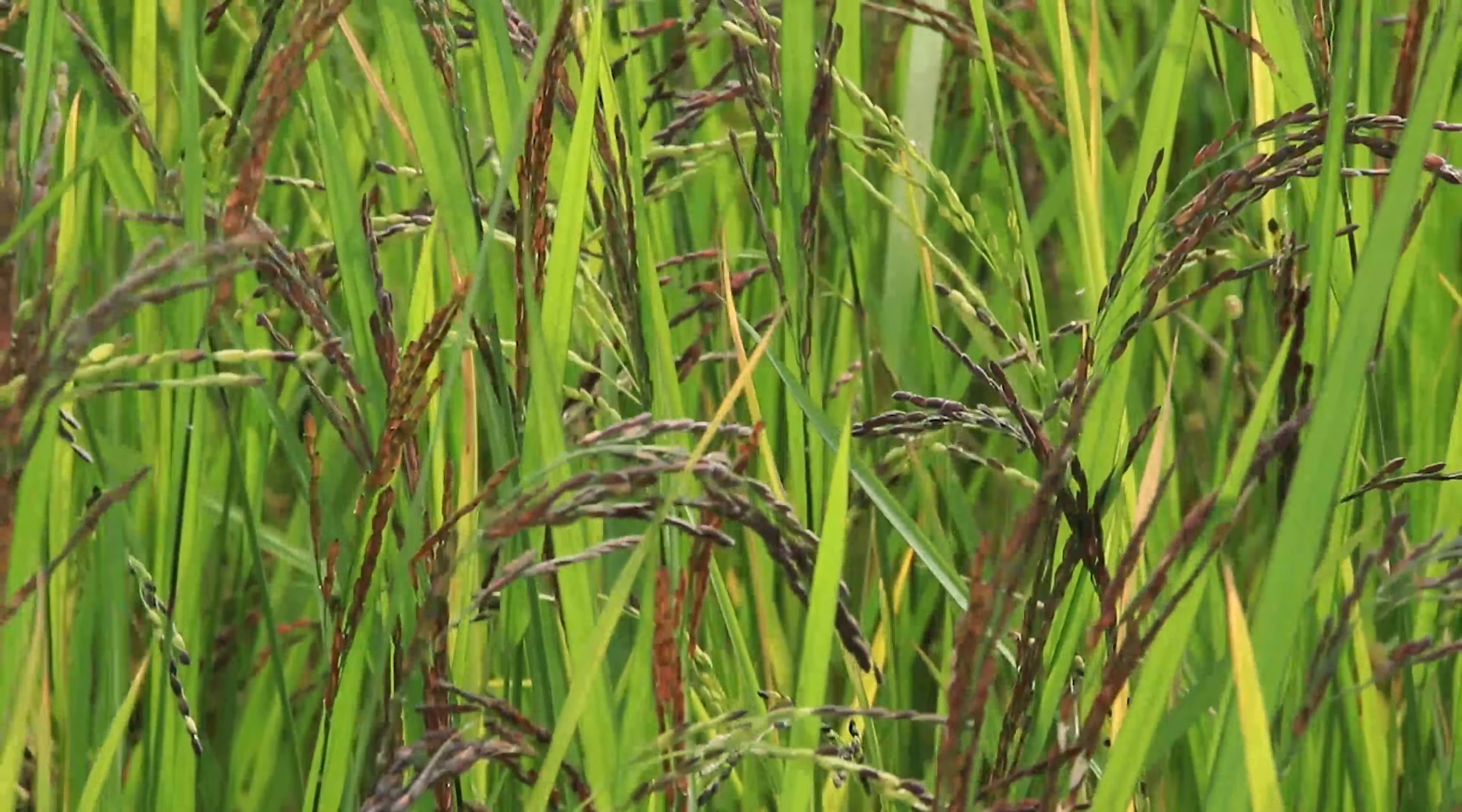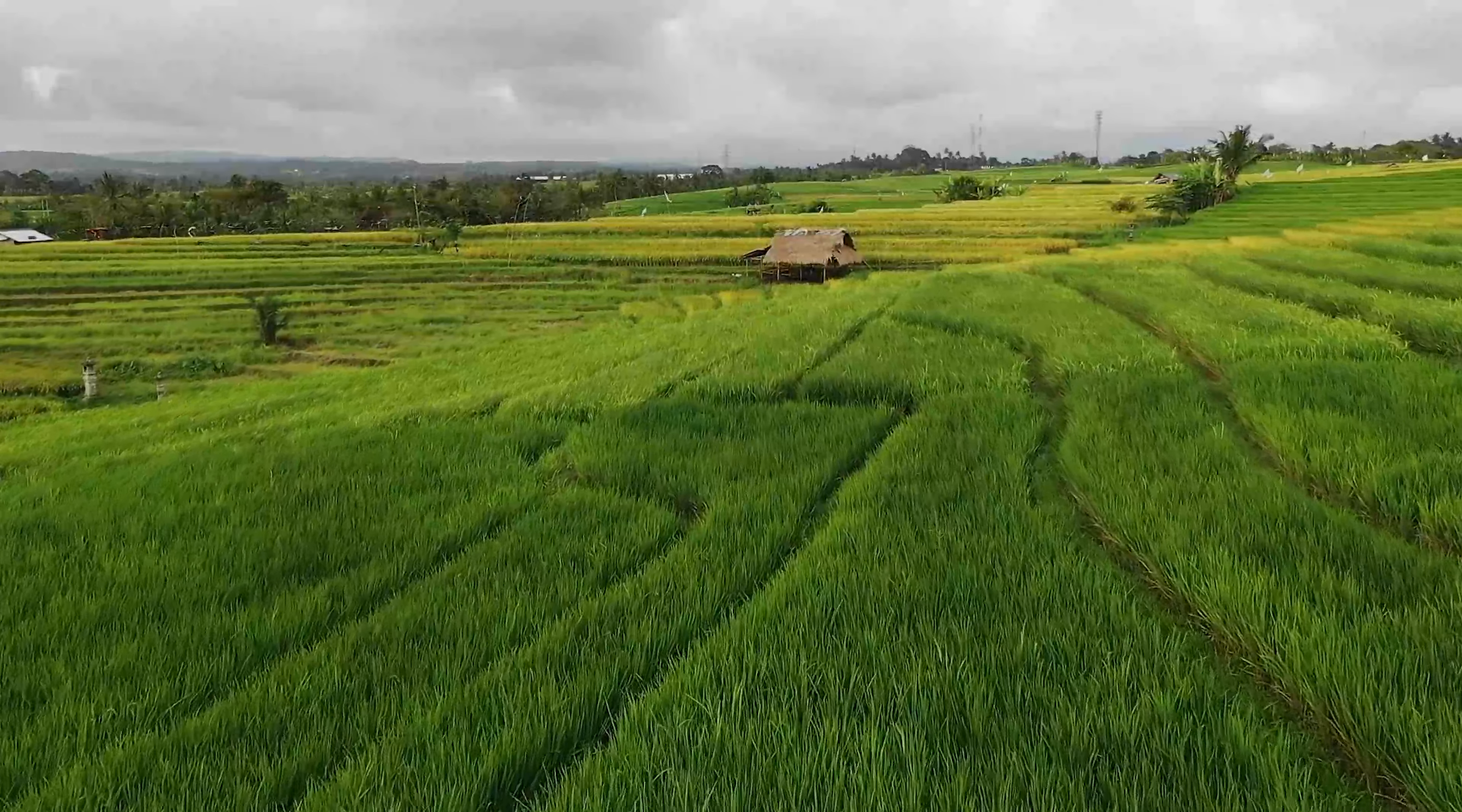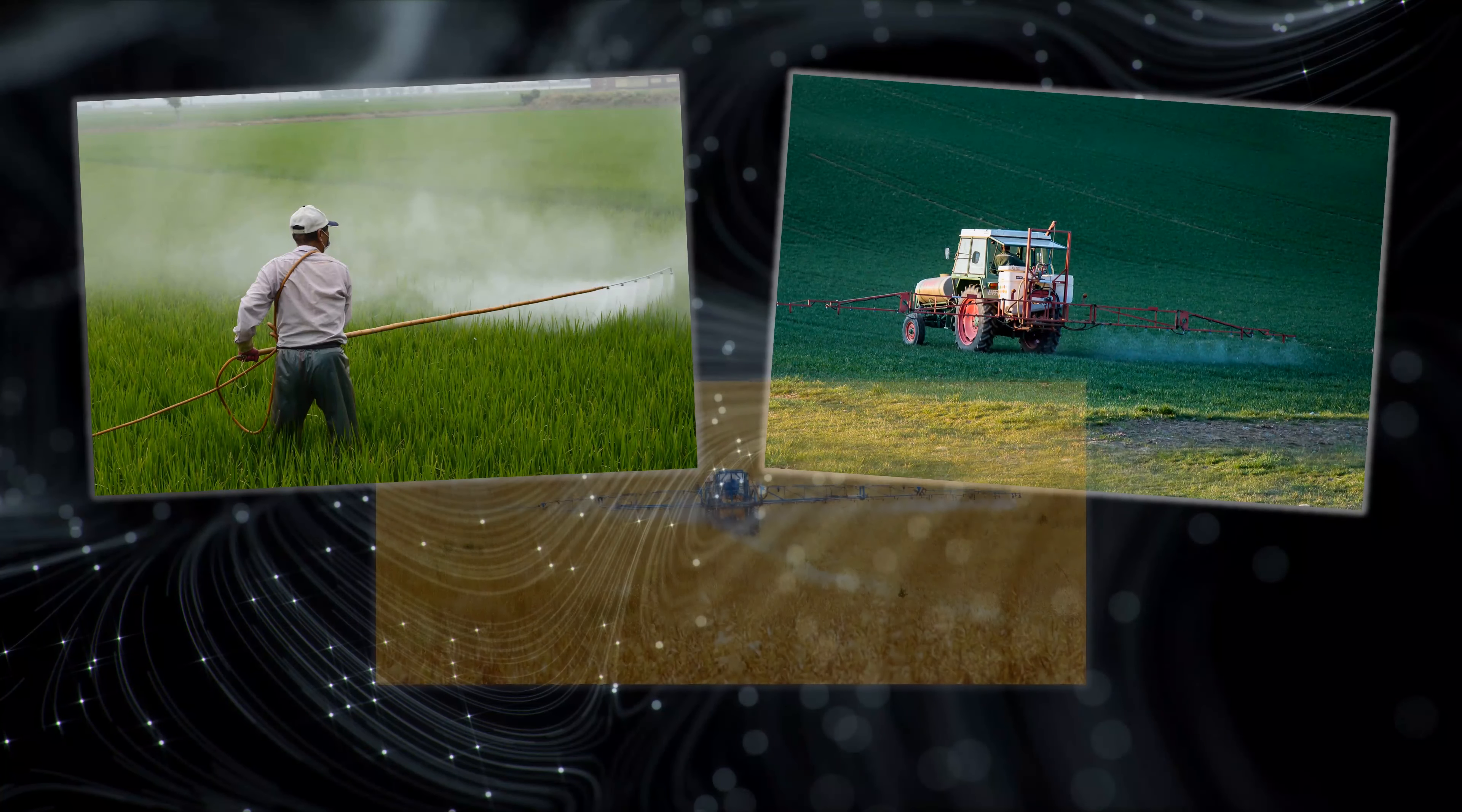Almost half of India's population relies on agriculture. To boost agronomic productivity, farmers use pesticides like DDT, Malathion and Parathion.